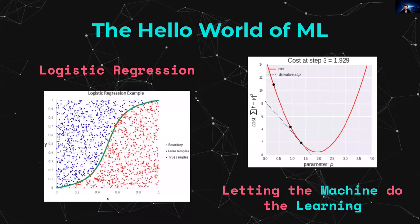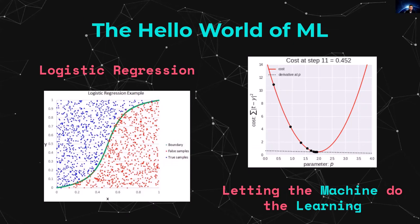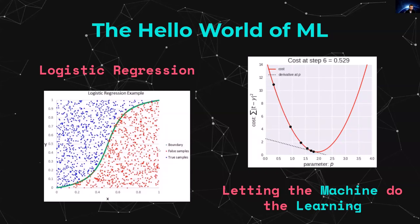Today we're going to cover something in the world of machine learning: the hello world of machine learning — logistic regression. This involves taking a specific data point and classifying it as either true or false — a binary classification — and letting the machine do the learning on the GPU.